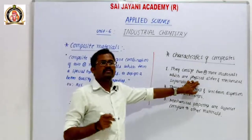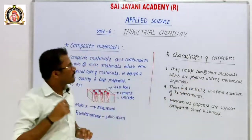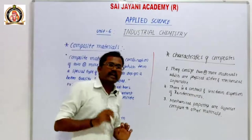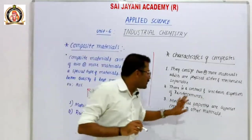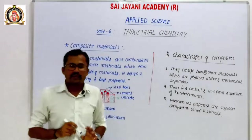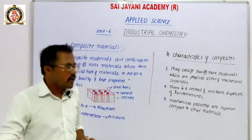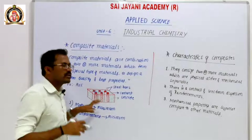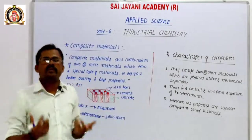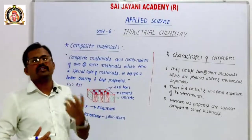The second characteristic is that there is a control and uniform dispersion of reinforcement during manufacturing. By varying the reinforcement dispersion, we can adjust and achieve the required properties of the composite material.